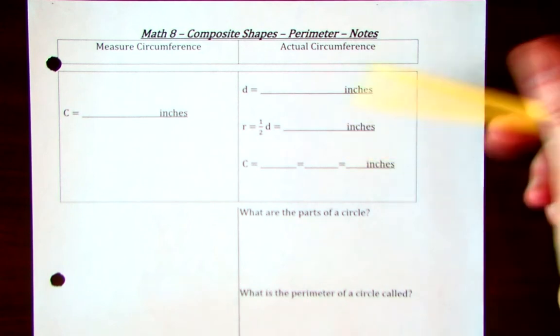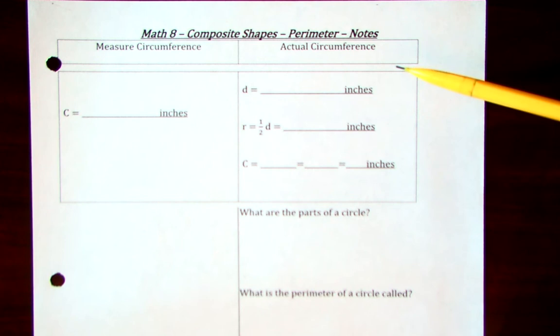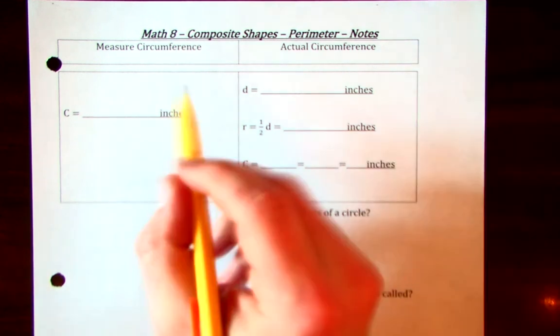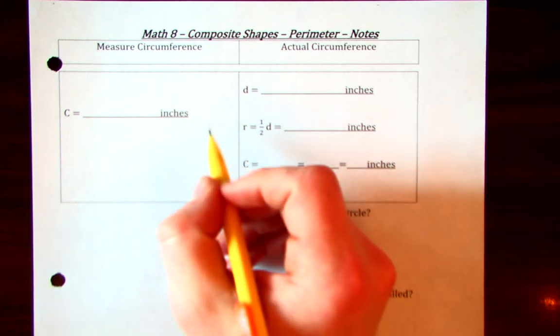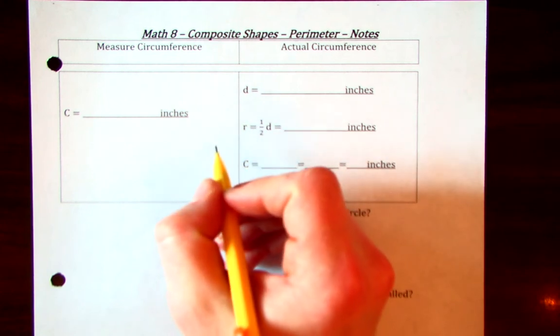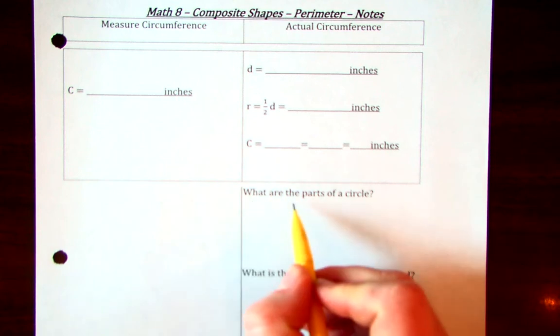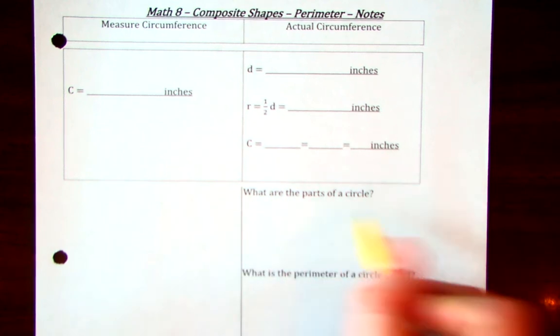Now that we covered some perimeter of some more rectangular shapes or some boxy boys, we're going to maybe work with some circles. Let's actually start right in the middle. What are some parts of a circle?